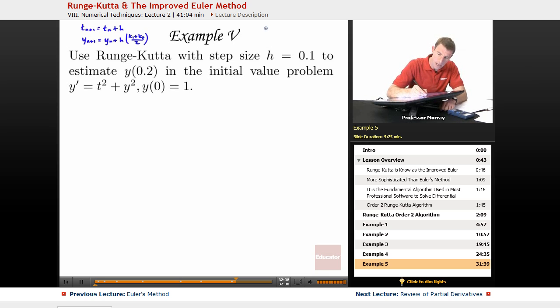And my k1 equals f of t_n, y_n, my k2 equals f of, this is where it gets complicated, t_n plus h and y_n plus h times k1.